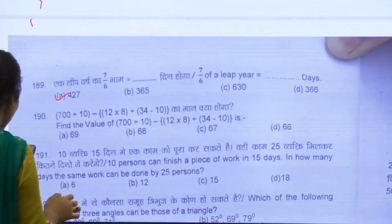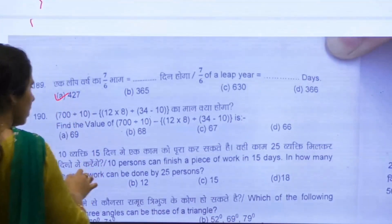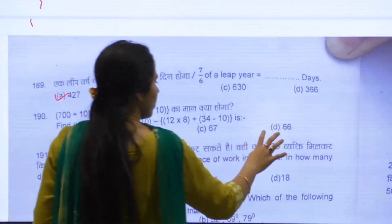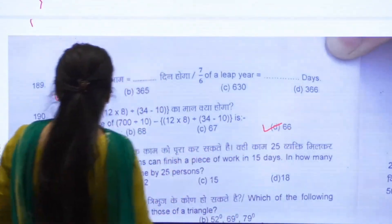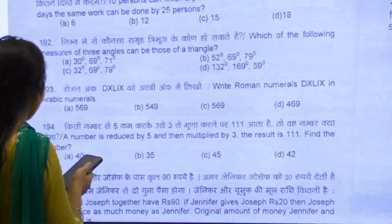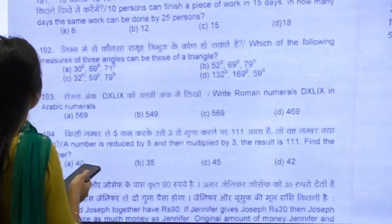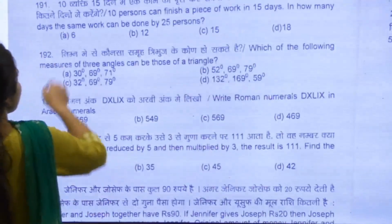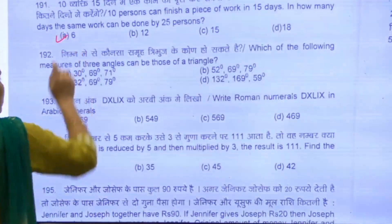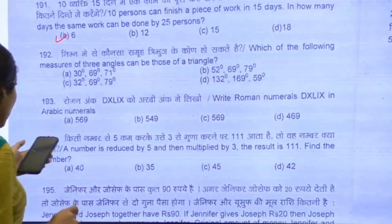190, we have D. 191, we have A as our answer. This is question number 191. A is the answer.